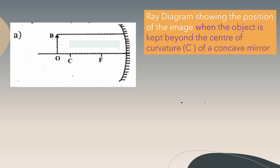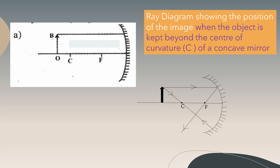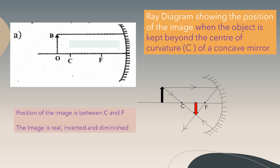Ray diagram showing the position of the image when the object is kept beyond the center of curvature of the concave mirror: the first ray, parallel to the principal axis, passes through the focus, and the second ray, passing through the center of curvature, passes without any deviation. At the point of intersection we have the image. The image is real, inverted, and diminished, and its position is between C and F.